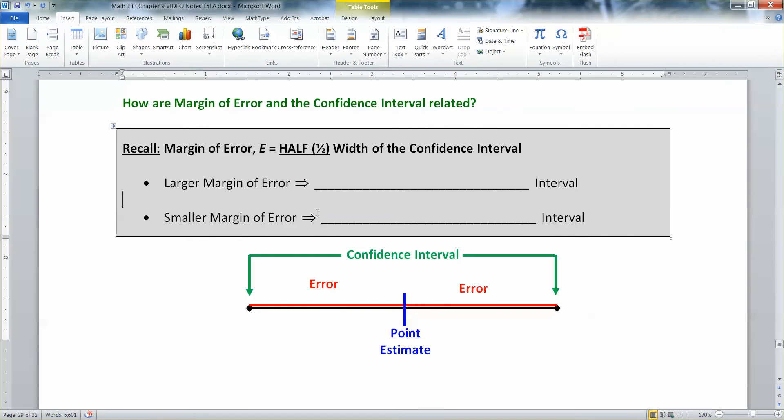Now keep in mind what that means, and I've drawn a little picture for you here. So the confidence interval is from one edge to the other, it's the part that's in green, and your error is half of that with your point estimate right in the middle.